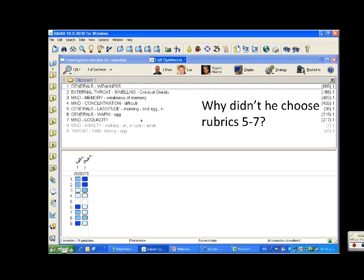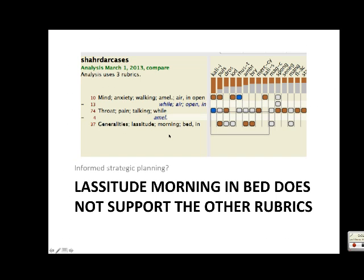Why didn't he use rubric 5 with only 38 remedies? I repertorized these three rubrics - the ones he used - and the one he didn't use. Kali-I and Rhus-tox are not represented in 'Lassitude, Morning, Bed.' So that rubric does not support the other rubrics. That's why he didn't choose it.